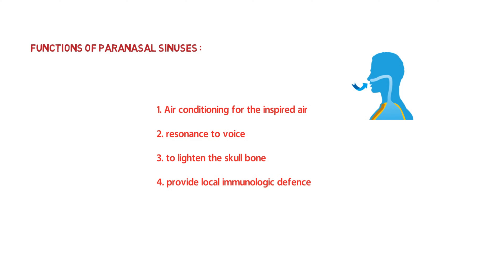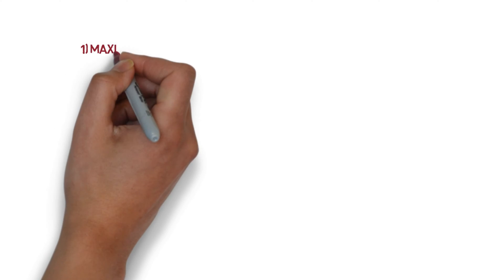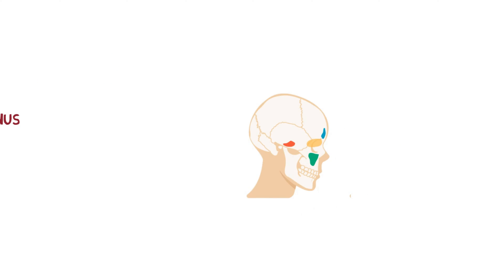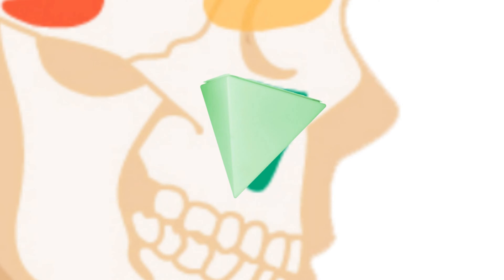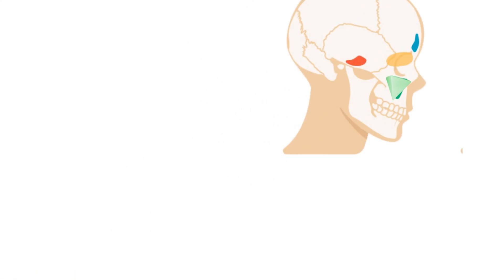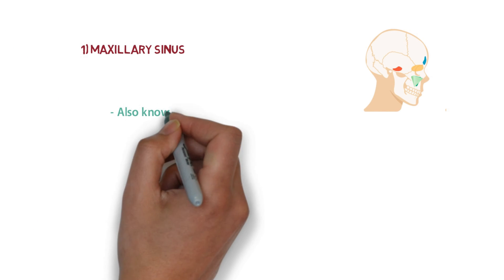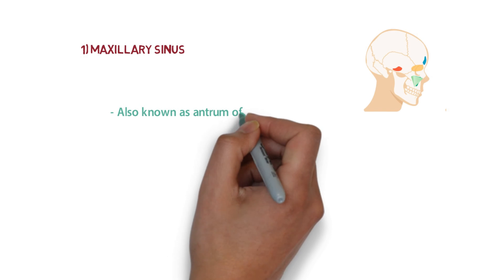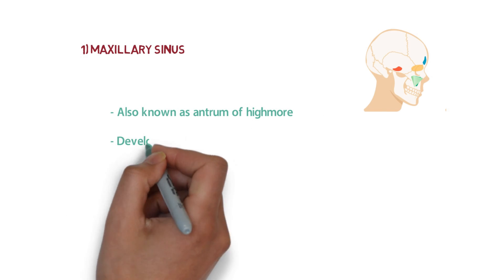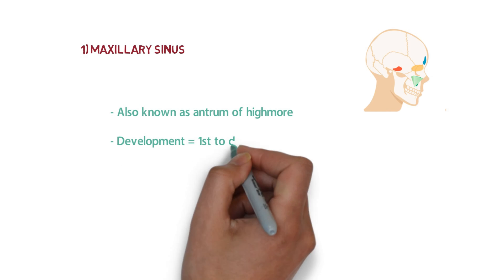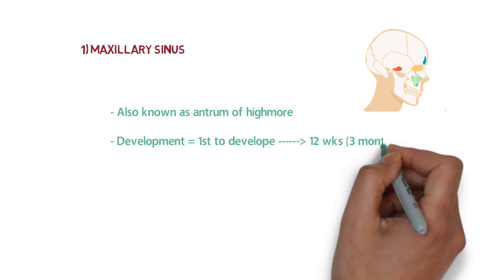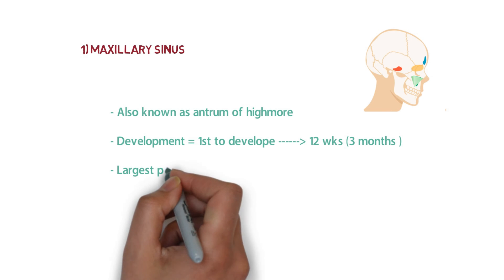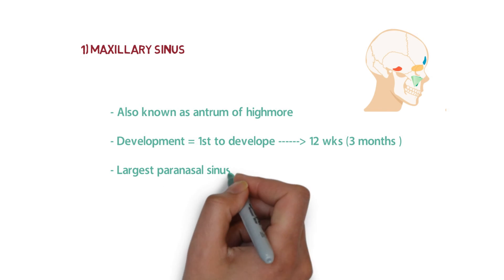The first sinus is the maxillary sinus. Its shape appears like a pyramid. The maxillary sinus is also known as the antrum of Highmore. It develops within 12 weeks, or within the third month of the gestation period, and that is why it is the first sinus to develop. It is also the largest paranasal sinus compared to the others.